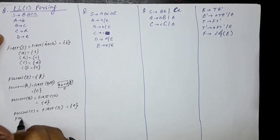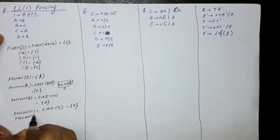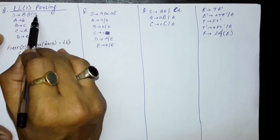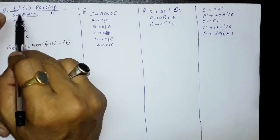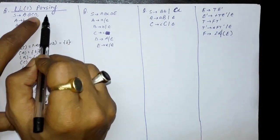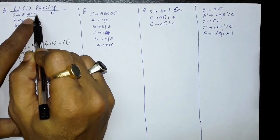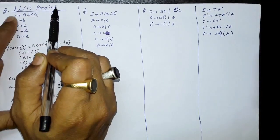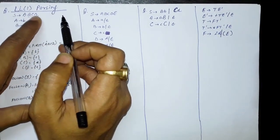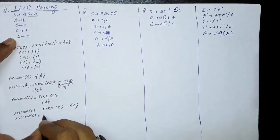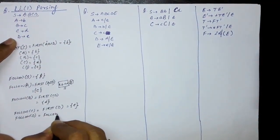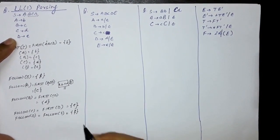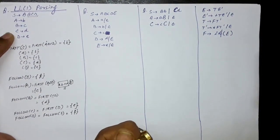After this, find out FOLLOW of D. D is the last symbol appearing in the production S produces ABCD. Since there is no symbol after D, FOLLOW of the last symbol equals FOLLOW of the left hand side. So FOLLOW of D equals FOLLOW of S, which is dollar.